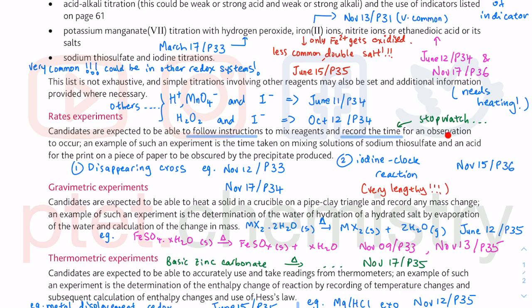This is for an observation to occur, and that is essentially the disappearing cross experiment. You mix the solution together in a conical flask, and this conical flask is on top of a piece of paper which could be provided by Cambridge or in the school experiment. We provide the students with a big cross at the bottom. As this reaction produces a precipitate — a solid — that cross will be obscured. You can find this in my rate of reaction topic, which was part of what I did for GCSE, O-level, or IGCSE chemistry on rate of reaction.